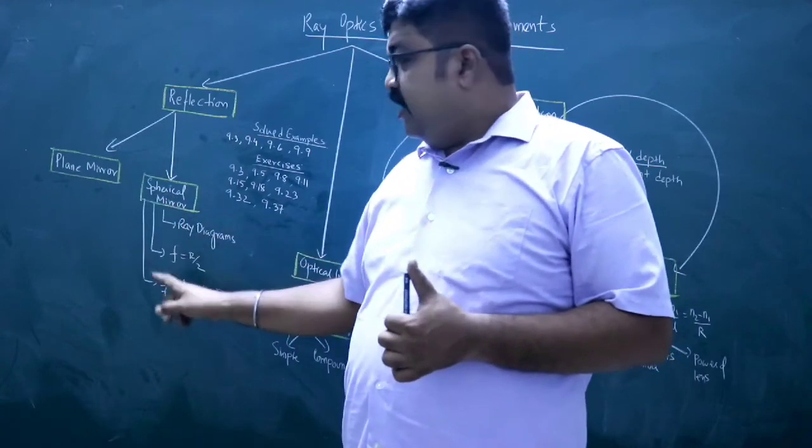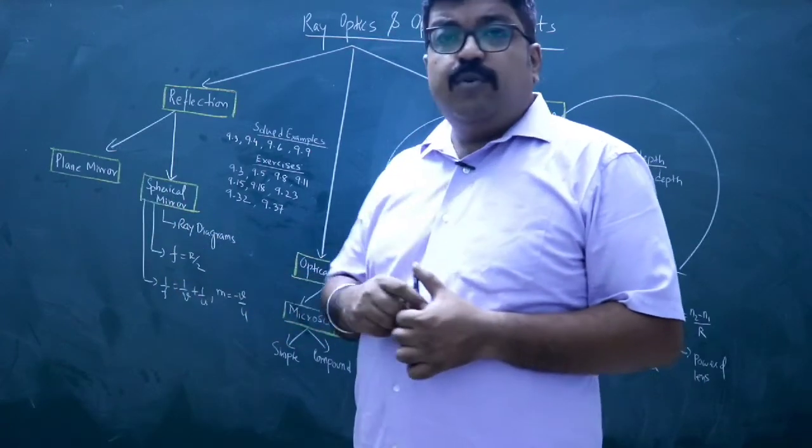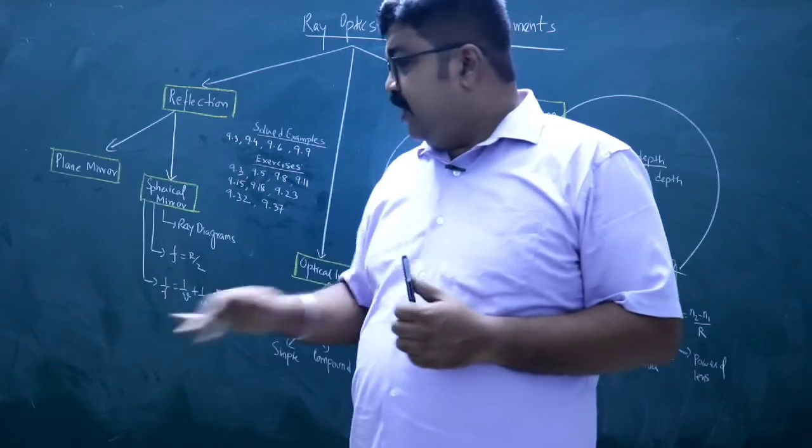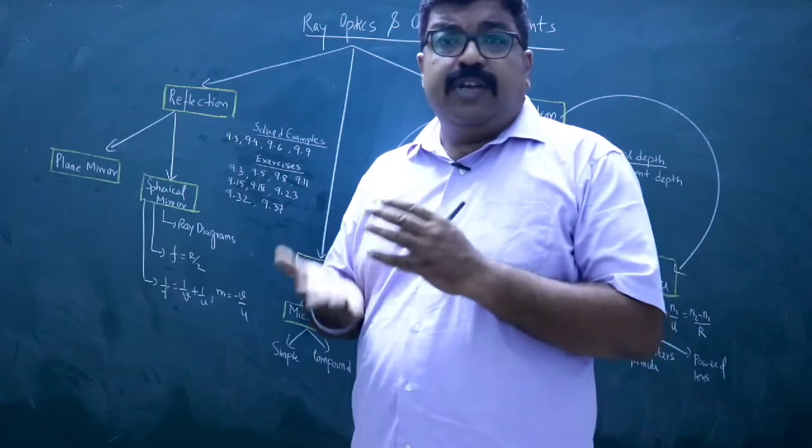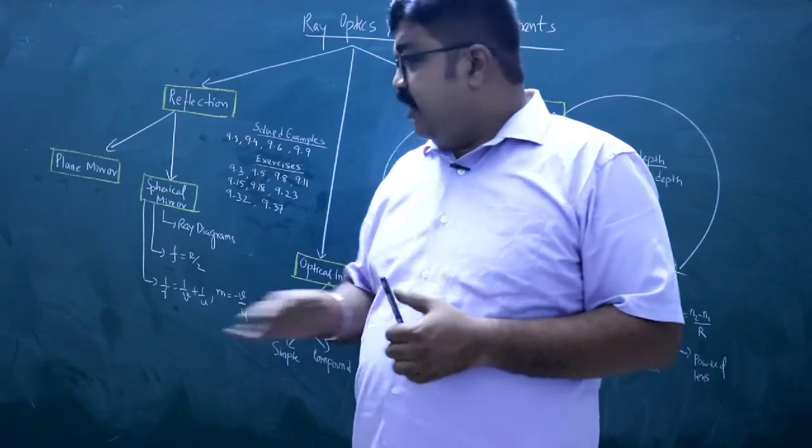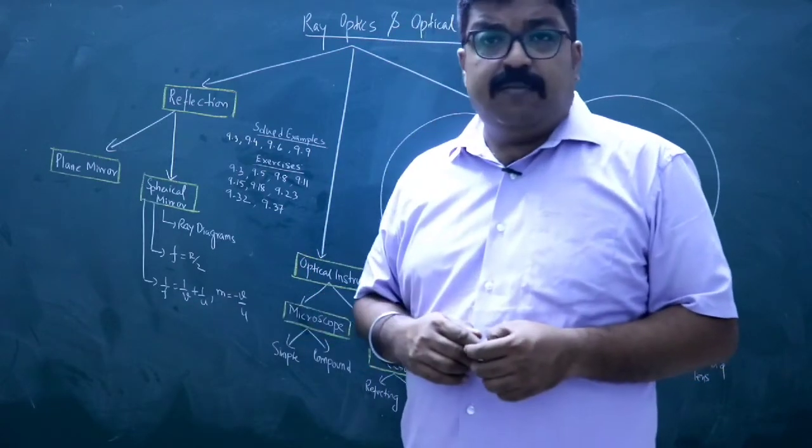In addition to that, this formula is f equal to r by 2, focal length and radius of curvature. Then mirror formula and magnification for both real and virtual images. You will practice this for spherical mirrors.